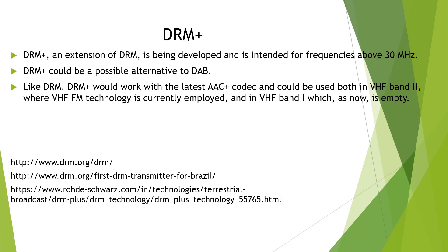DRM Plus is an extension of DRM currently being developed, intended for frequencies above 30 megahertz. DRM Plus could be a possible alternative to DAB. Like DRM, DRM Plus would work with the latest AAC Plus codecs and could be used in VHF Band 2, where VHF FM technology is currently employed, as well as in VHF Band 1, which is currently empty.